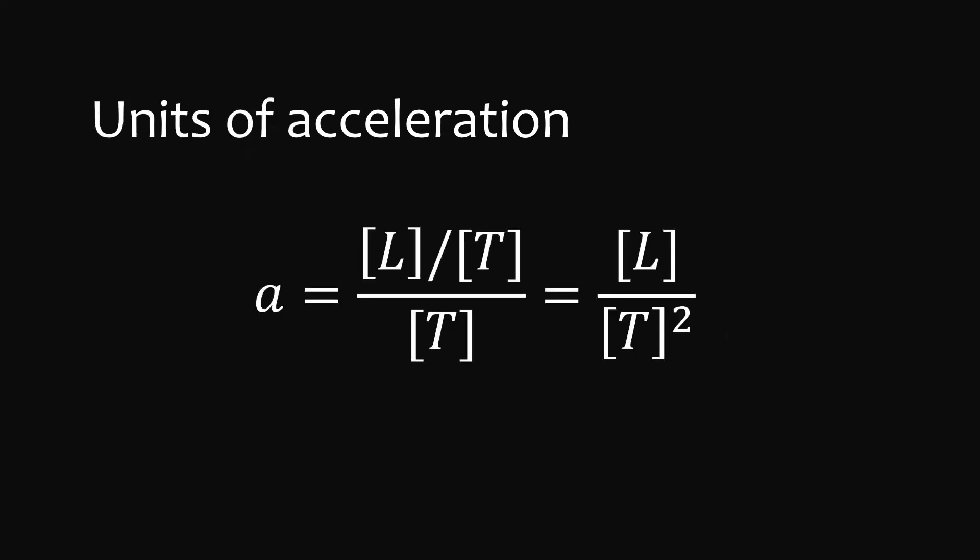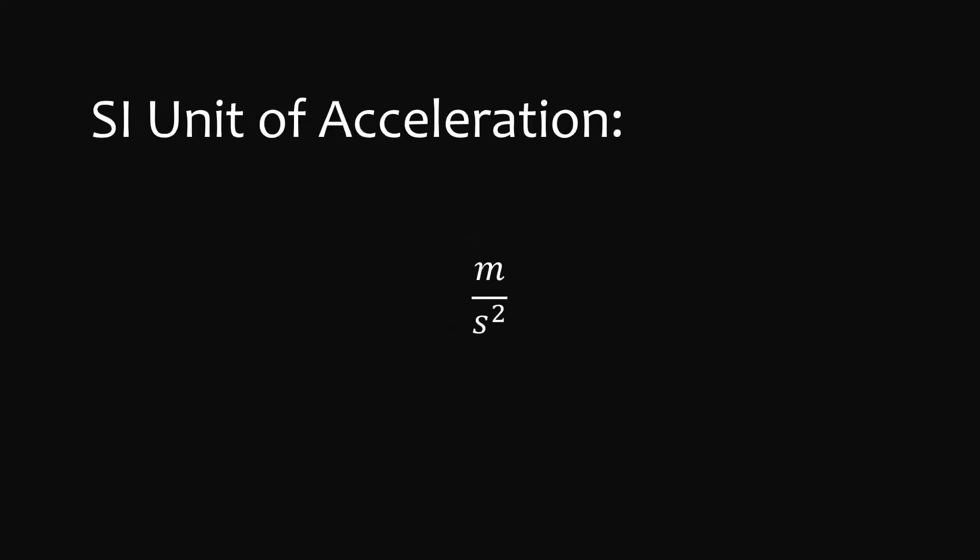The units of acceleration are the units of velocity divided by the units of time, or the units of length divided by time squared. The SI unit of acceleration is meters per second per second, or meters per second squared.